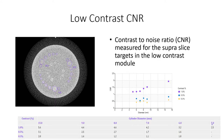Low contrast contrast-to-noise ratio measurements for the CTP 515 module with the 1%, 0.5%, and 0.3% contrast levels are calculated and charted for the 5 mm to 15 mm diameter targets.